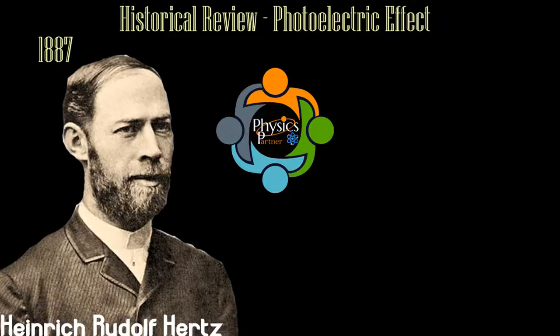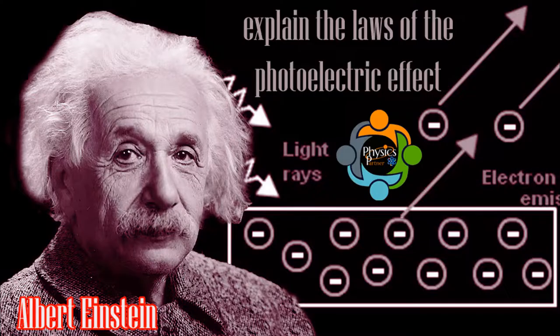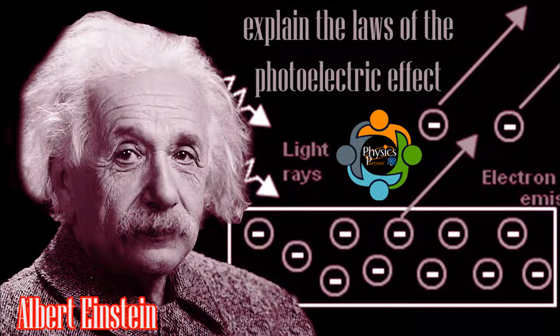Let's make a historical review. Heinrich Rudolph Hertz, a German physicist, developed the photoelectric effect in 1887. In 1902, German physicist Philip Lennard established the connection between light and electricity, hence it's called photoelectric. Albert Einstein was the first to successfully explain the laws of the photoelectric effect.